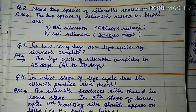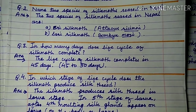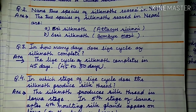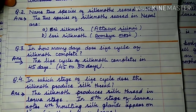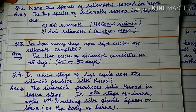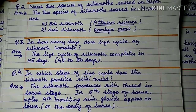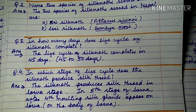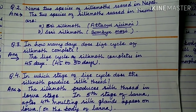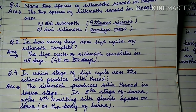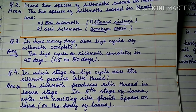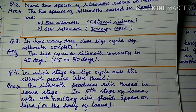Question number 4: In which stage of the life cycle does the silk moth produce silk thread? The silk moth produces silk thread in the larval stage — that is in the fifth instar larvae, after fourth molting. Silk glands appear on the body of the larva.